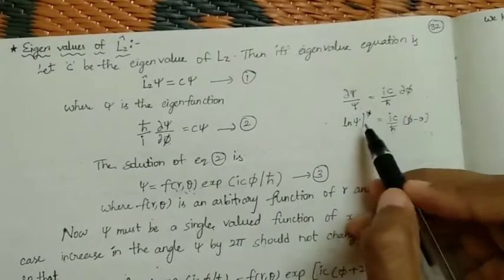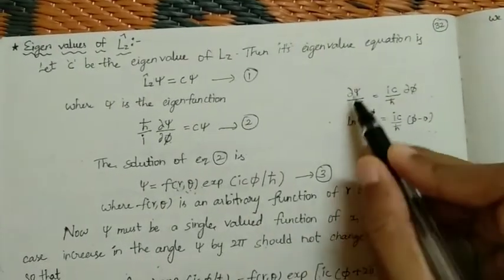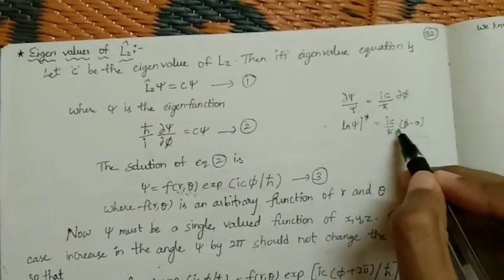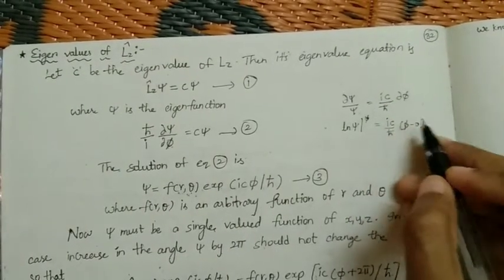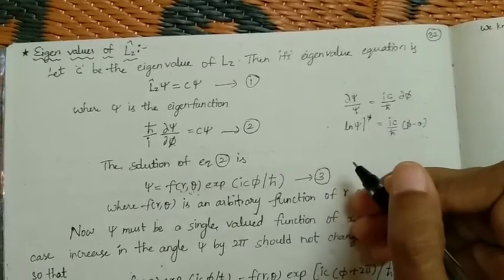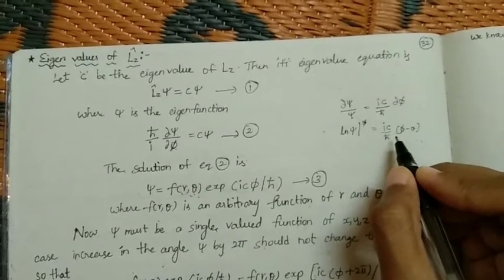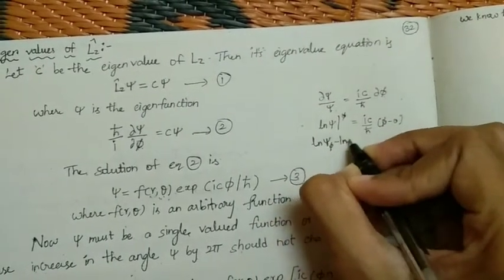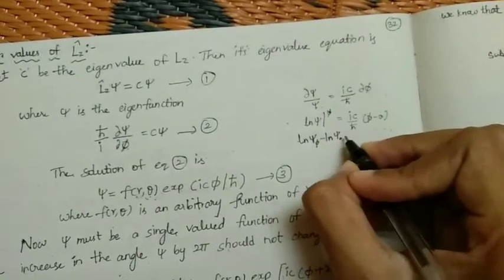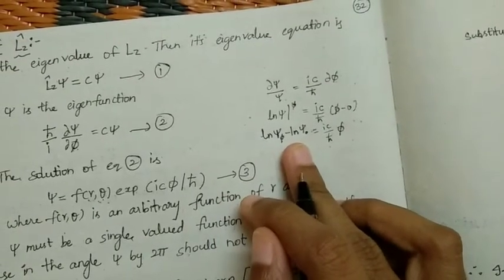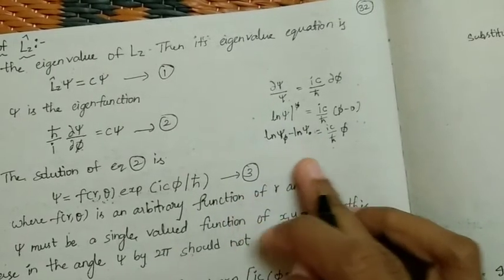Integrating both sides: the integral of 1/xi d-xi is of the form 1/x dx, which gives ln(xi). The integral of d-phi is phi, applying limits from 0 to phi. This gives ln(xi at phi) minus ln(xi at 0) equals i-C over h-bar times phi. Using ln(a) minus ln(b) equals ln(a/b), we get ln(xi-phi over xi-0) equals i-C-phi over h-bar, so xi-phi over xi-0 equals e to the power i-C-phi over h-bar.